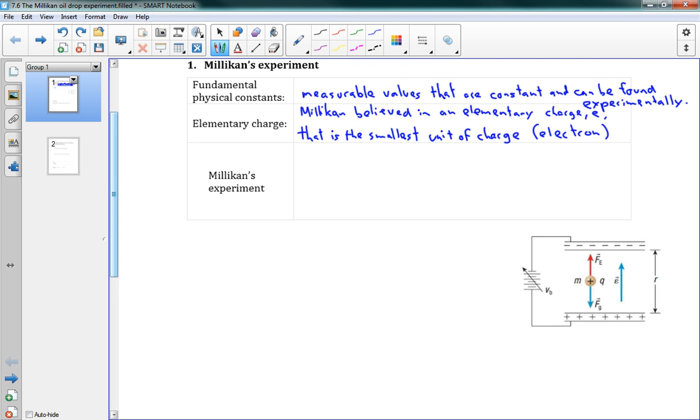So let's see, Millikan's experiment. He sprayed oil drops between two electric plates using an atomizer, and that's basically just, think of your spray bottles that you might have at home, just a spray bottle, which ionized the drops. So when you use a spray bottle, the particles get a bit ionized because of the friction of being turned into that sort of mist, and so some of them are positive, some of them are negative.